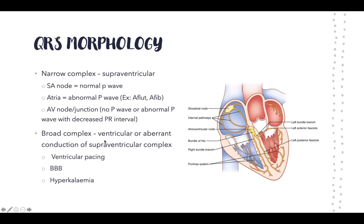A broad complex signifies that the signal is either originating from the ventricles themselves, or there is some abnormality in conduction from the supraventricular region. If it's a narrow complex, we know it's coming from above the ventricles, and there are a number of places where it can originate.